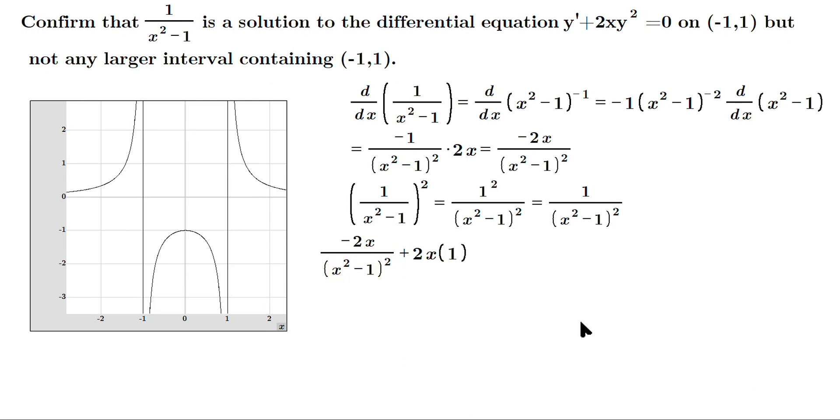Which would be 1 over this expression, so let's be careful: (x²-1)² and we're checking does this equal zero? Well, that's -2x/(x²-1)² plus distribute the 2x to the 1, so 2x/(x²-1)².